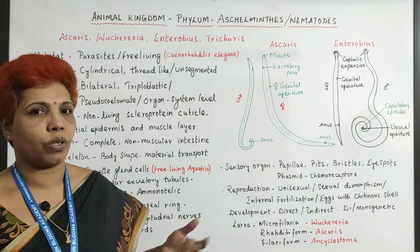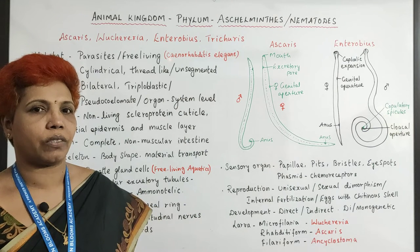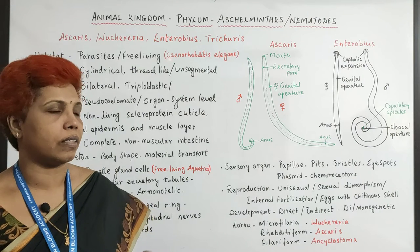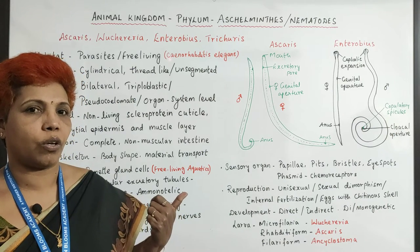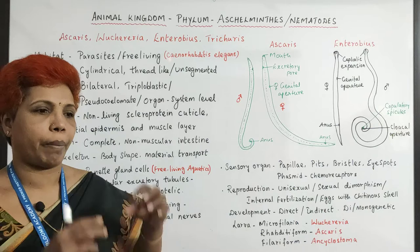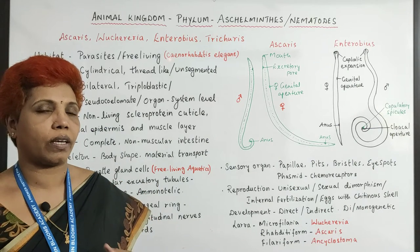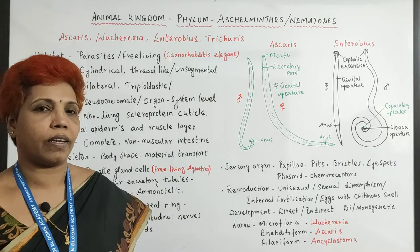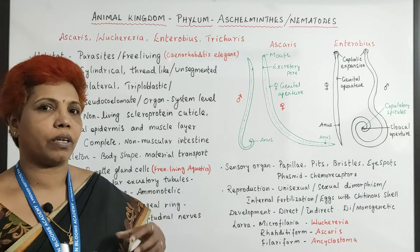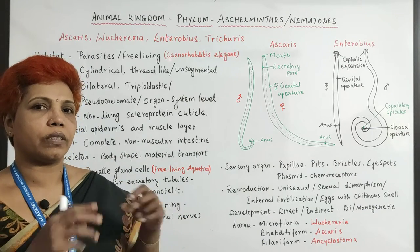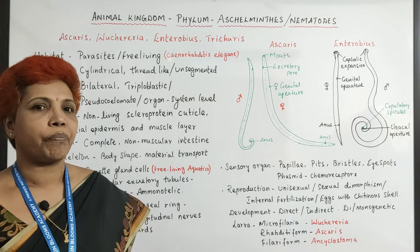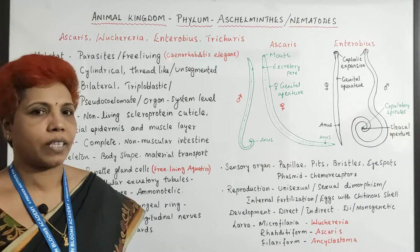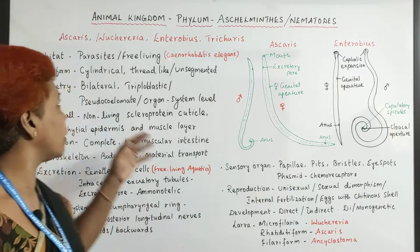Aschelminthes are also triploblastic. The triploblastic condition started from Platyhelminthes, and here it is a pseudocoelomate animal — like patches of mesoderm. It is not like the previous case nor the next one. There is a patch of mesodermal layer with a pseudocoelomic condition, and that is the uniqueness of Aschelminthes.